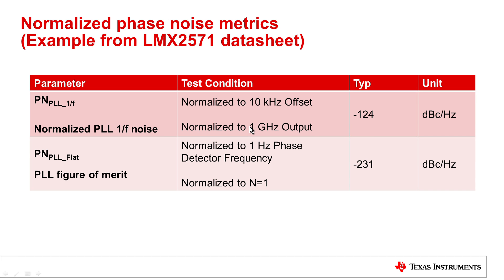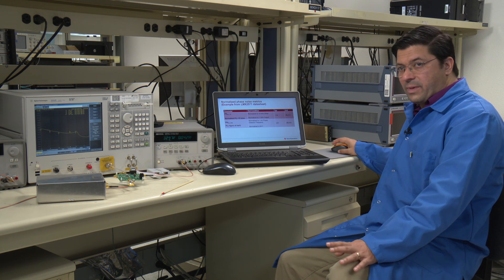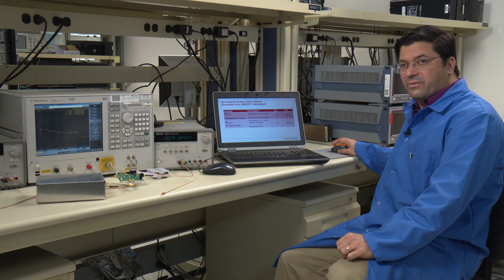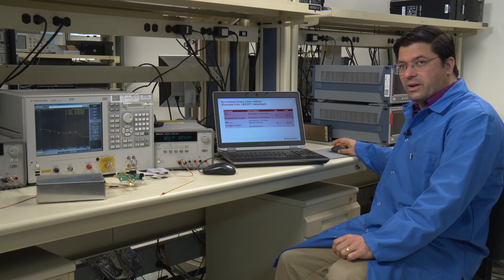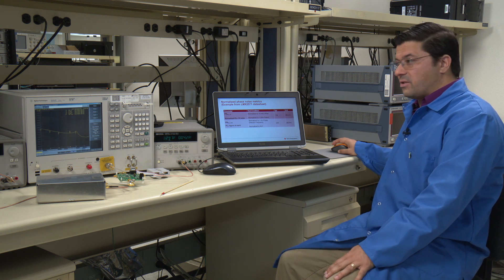If we look at some of the datasheet numbers, for instance on the LMX2571, this has a figure of merit of minus 231 and has a flicker noise of minus 124. So that's normalized to 10 kHz and 1 GHz output. So now what I'd like to do is actually measure some of this PLL figure of merit and 1 over F noise, and also just take a quick look at the VCO phase noise.